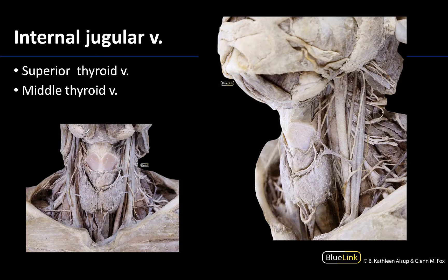Let's talk about the internal jugular vein, which you can see really nicely in these views. We're looking at a lateral view here showing the contents of the carotid sheath — the common carotid artery, the vagus nerve, and then laterally the internal jugular vein. This is a very large and robust vein. The internal jugular vein begins at the jugular foramen; deoxygenated blood draining from the brain drains into it, heading toward the root of the neck to help form the brachiocephalic veins. It has many smaller tributary veins draining into it.